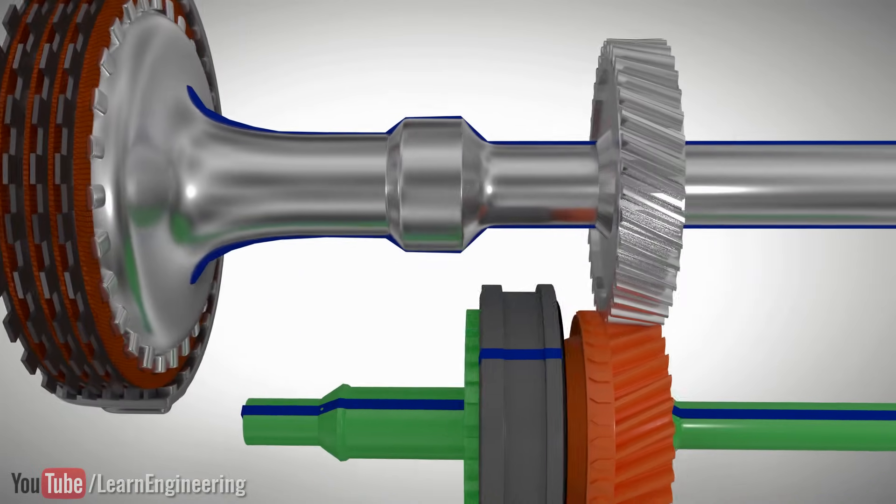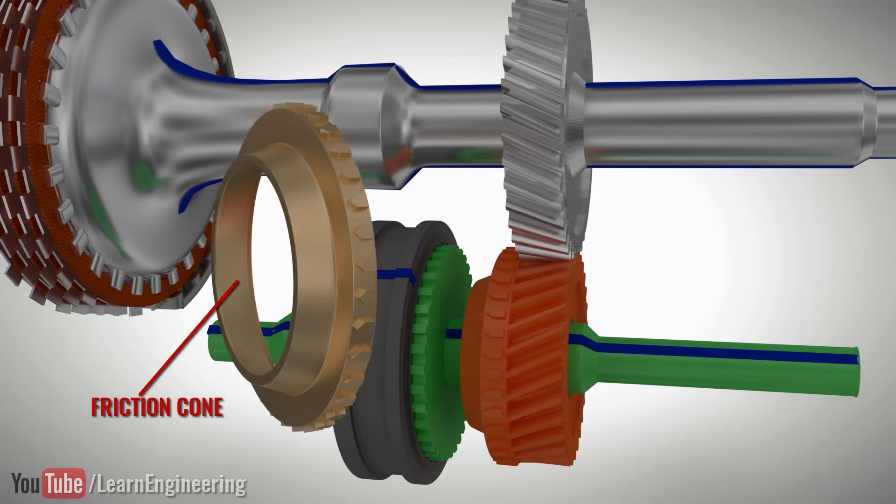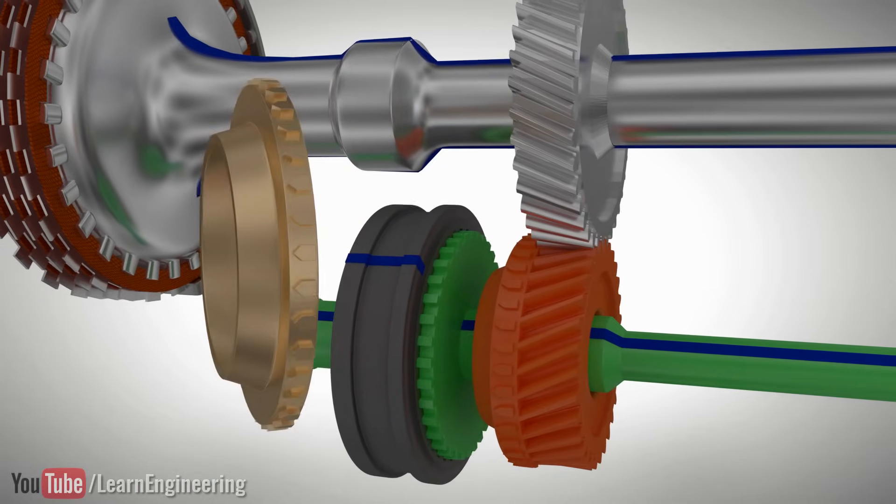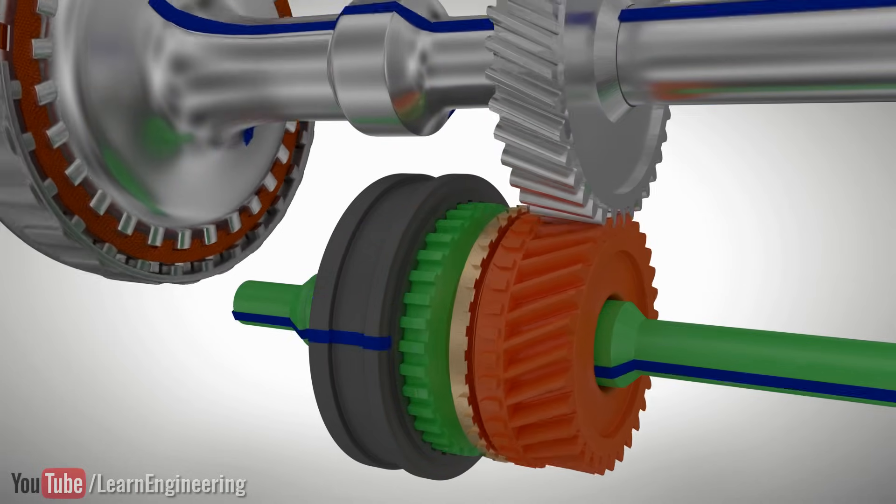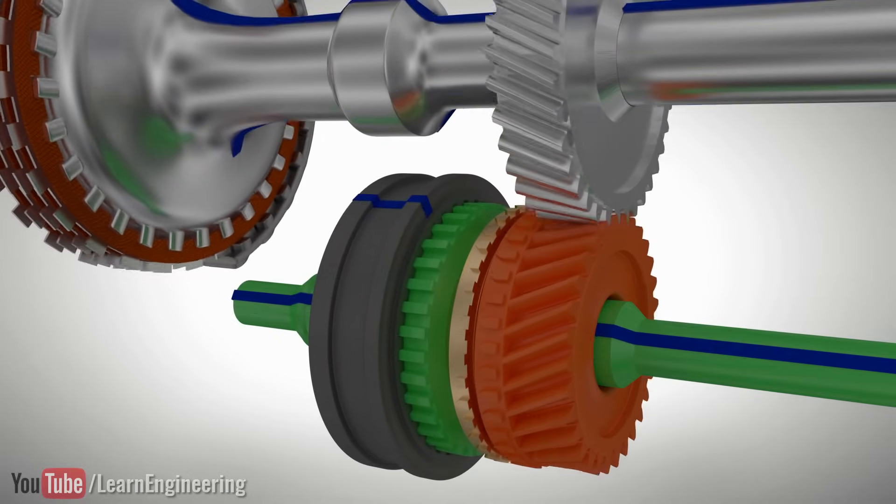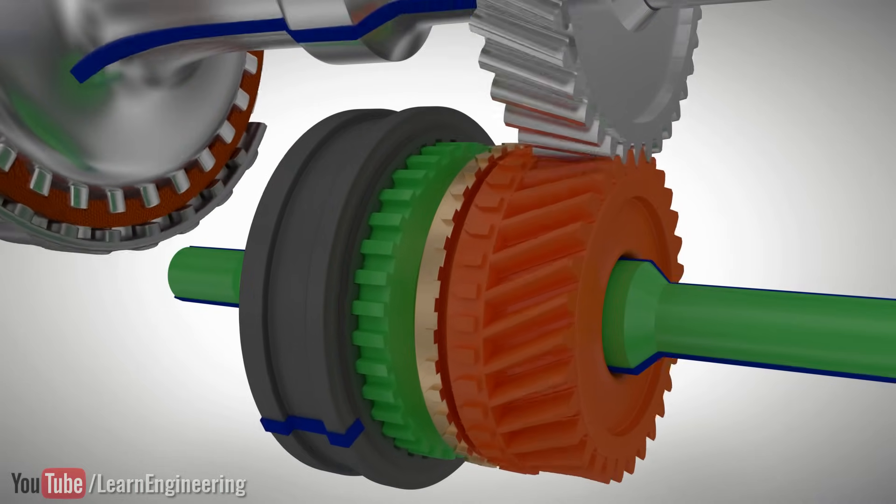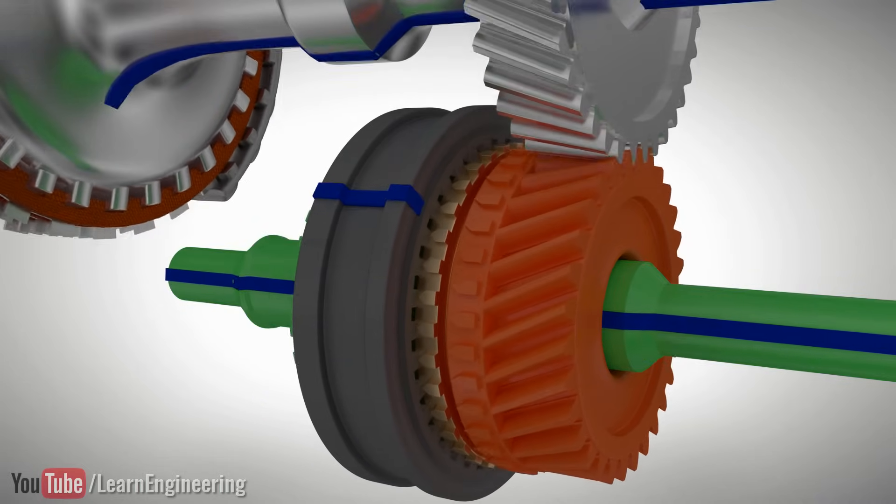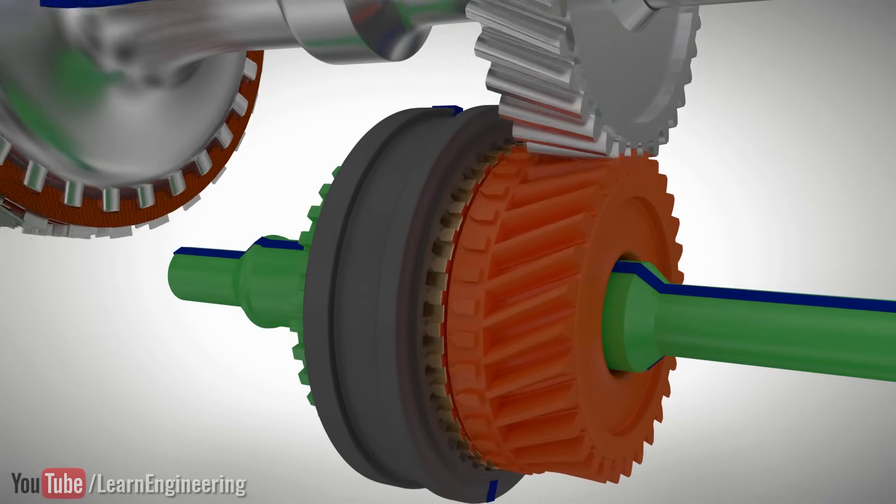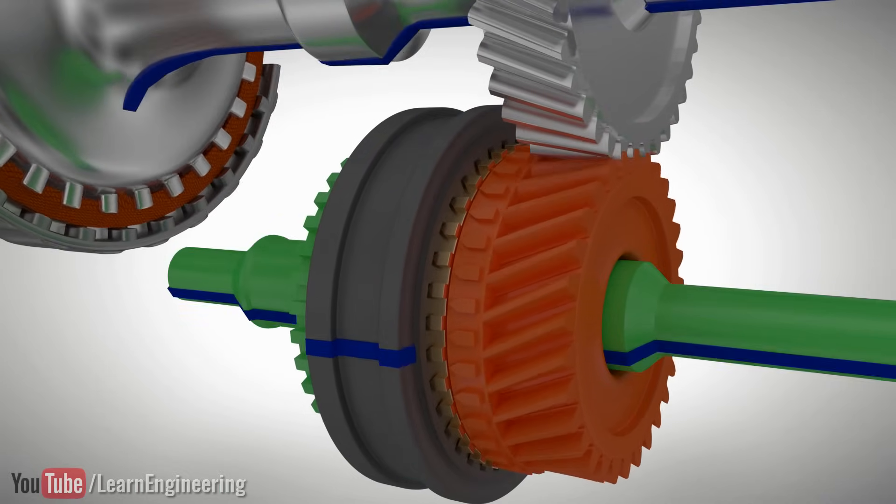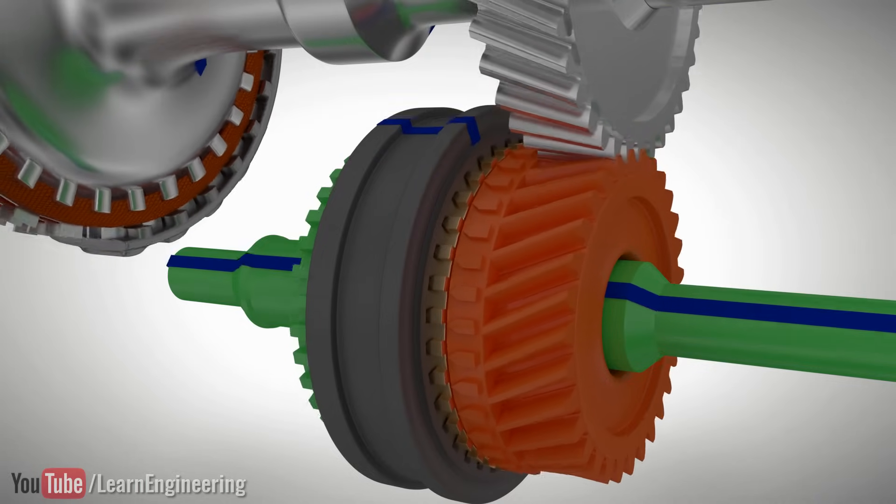When there is no power flow to the transmission, a synchronizer ring which has a friction cone will help to match the speed of the gear with the shaft. When the synchronizer ring is pressed against the cone of the gear, the speed match will occur. After the speed match, the sleeve can easily slide and lock the shaft and gear together.